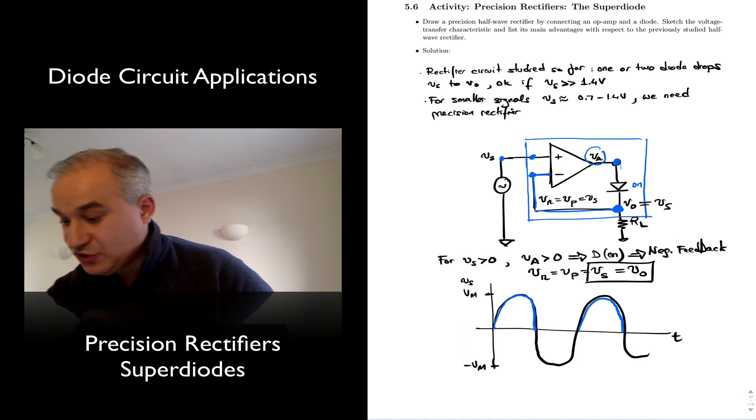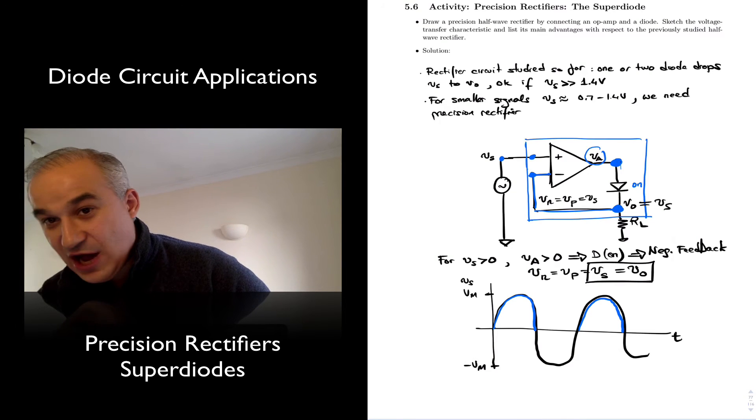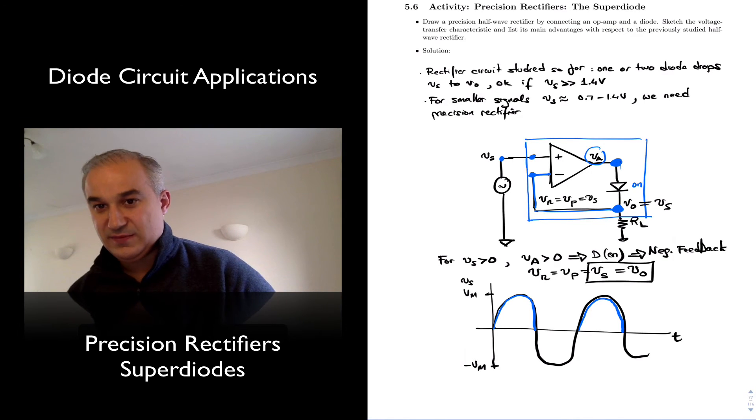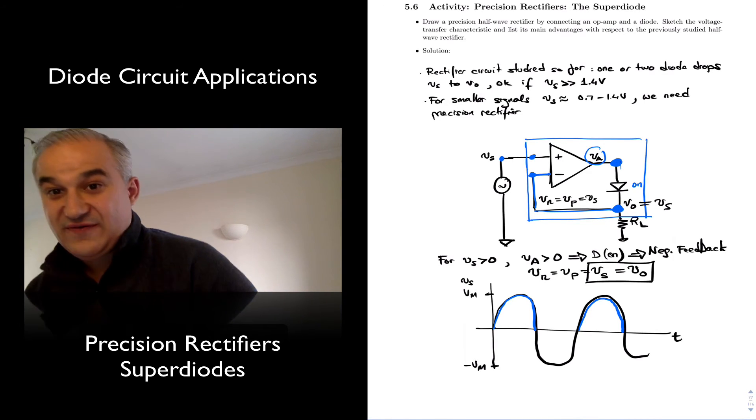And that's, again, because the operational amplifier adjusts the output so as to make the inverting input equal to the non-inverting input when you have negative feedback.